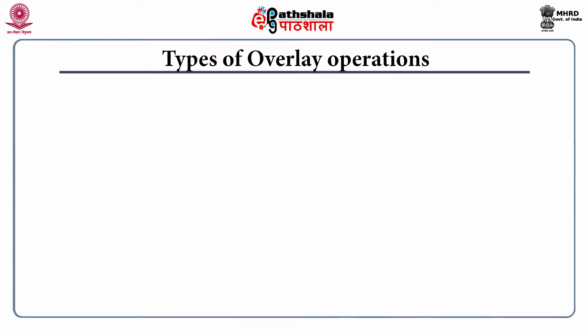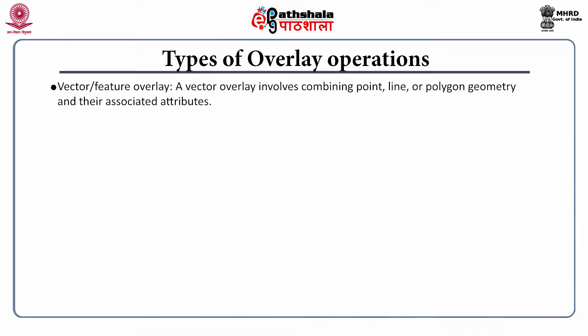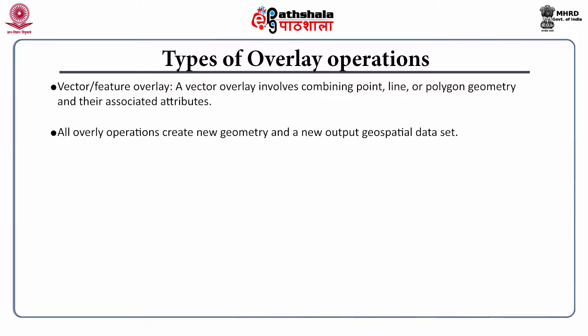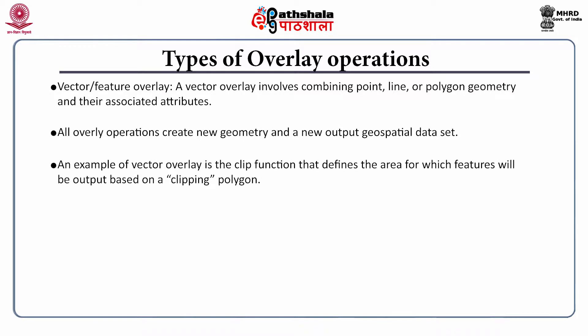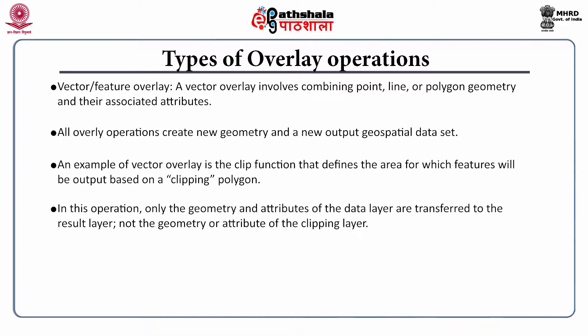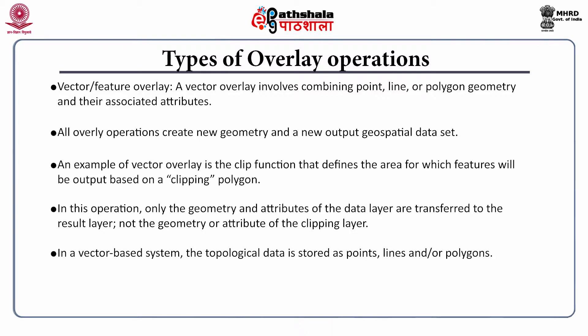Coming to the types of overlay operations, we have vector feature overlay. A vector overlay involves combining point, line or polygon geometry and their associated attributes. All overlay layer operations create new geometry and a new output geospatial data set. An example of vector overlay is the clip function that defines the area for which features will be output based on a clipping polygon. In this operation, only the geometry and attributes of the data layer are transferred to the result layer, not the geometry or attribute of the clipping layer.